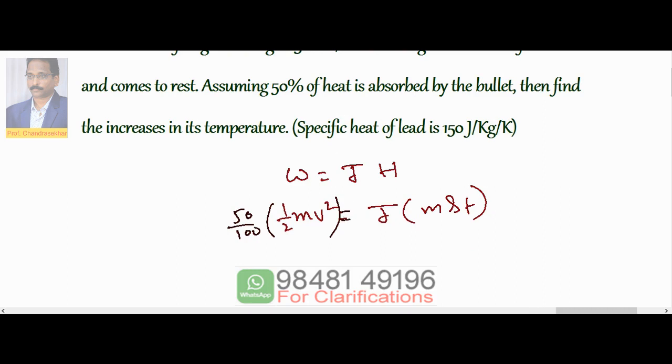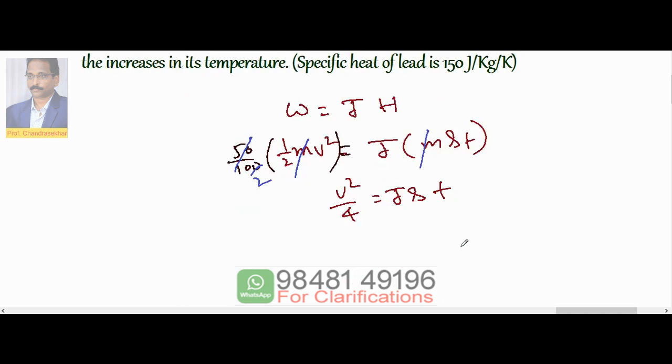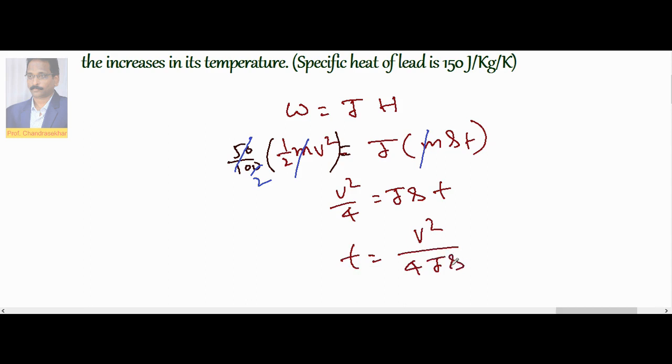Now on both sides I can cancel M. So 50%, this is 2 times. Then V squared by 4 equals J into S into T. So we can write T as rise in temperature, V squared by 4JS.